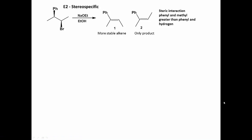This is an example of a stereospecific E2 reaction. In this E2 reaction, of the two possible alkenes that could form, the less stable alkene is the only product formed. It is the least stable of the two possible alkenes because the methyl and the phenyl groups are cis to each other.